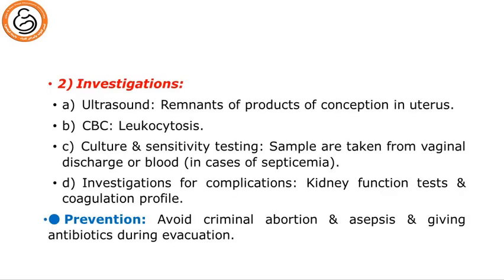To investigate septic abortion: ultrasound may find remnants of products of conception in the uterus. CBC will reveal leukocytosis. Culture and sensitivity testing from vaginal discharge or blood in cases of septicemia — blood film and blood culture and sensitivity. Investigation for complications: evaluate kidney function and coagulation profile. For prevention: avoid criminal abortion, which is considered septic until proved otherwise; use strict aseptic precautions and give antibiotics during manipulation or evacuation of uterine contents.